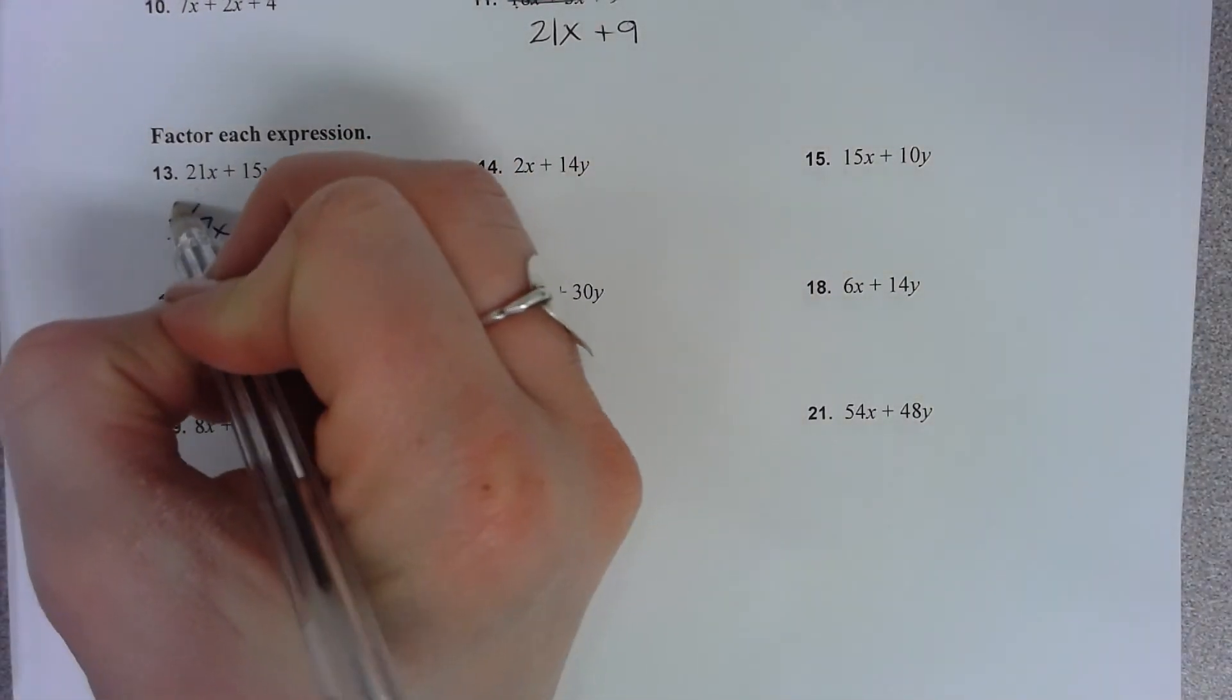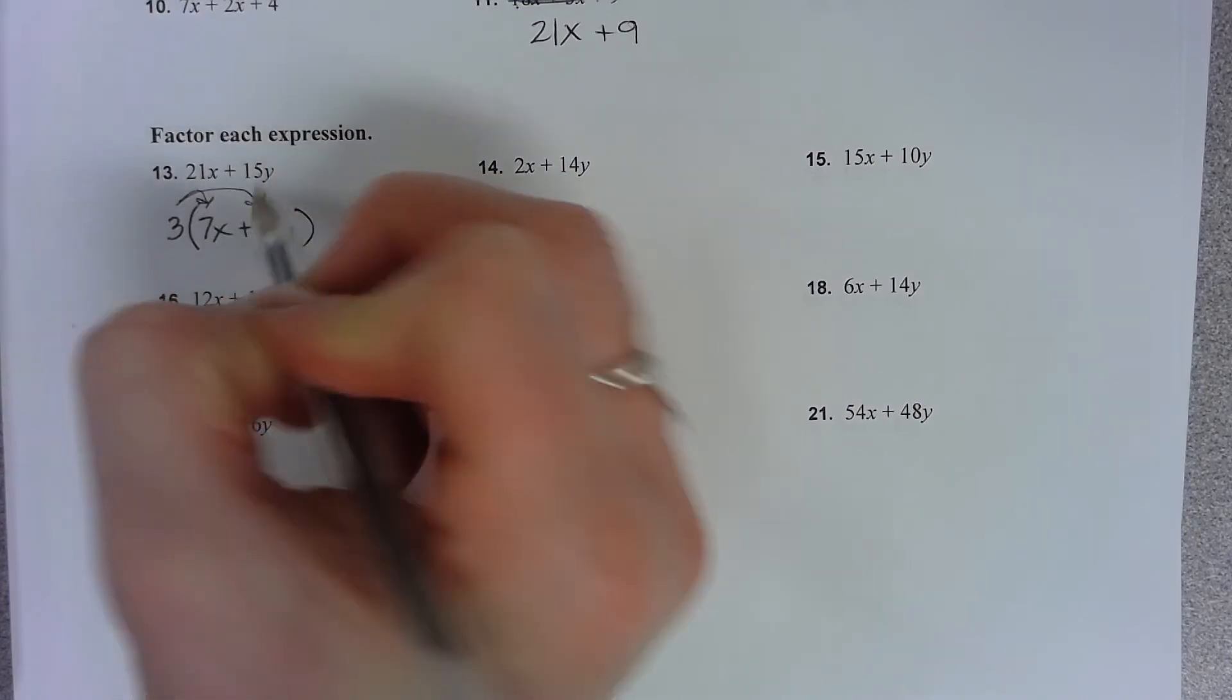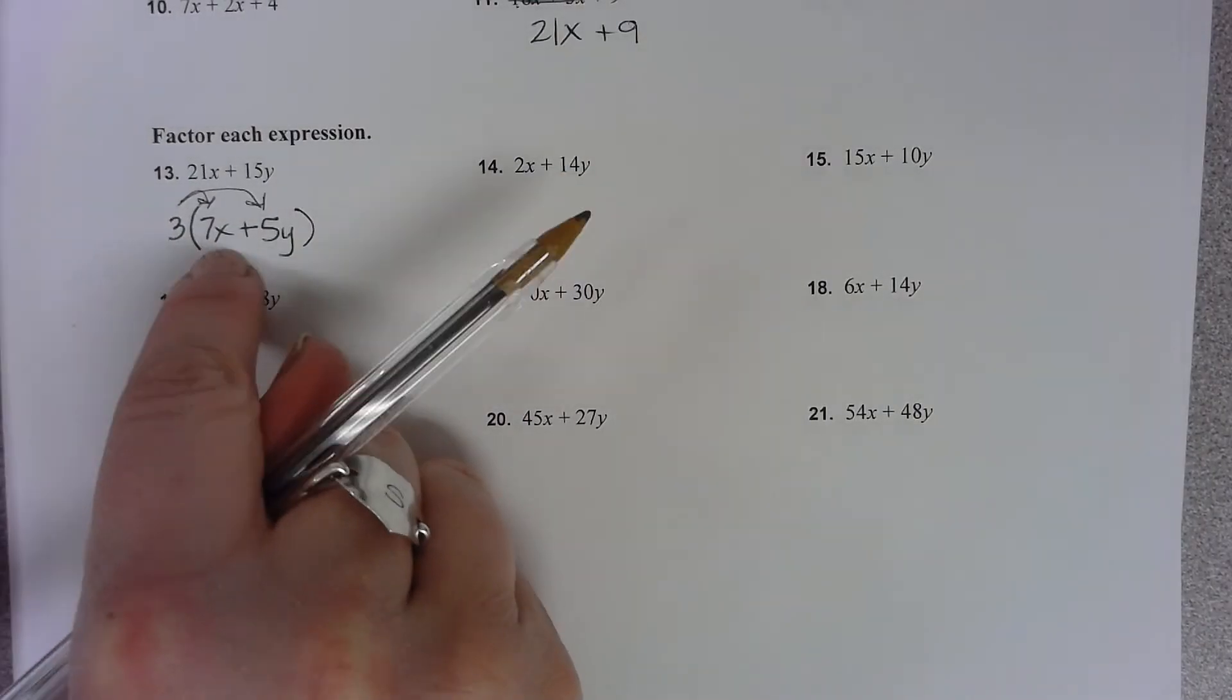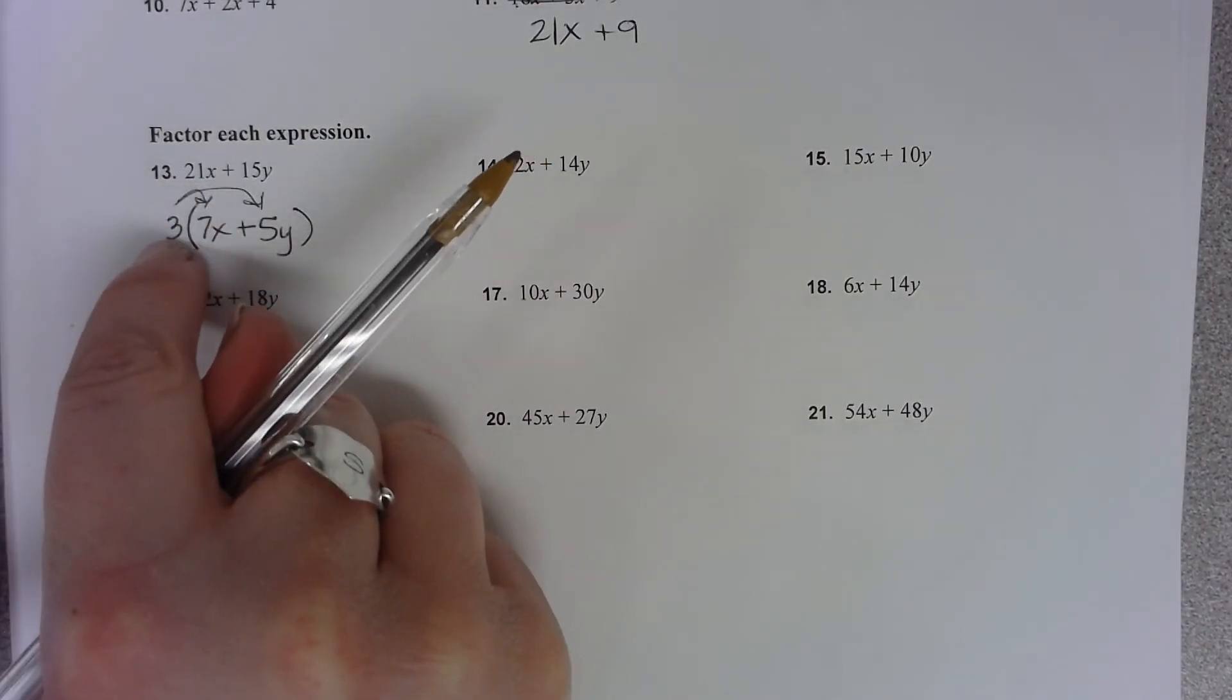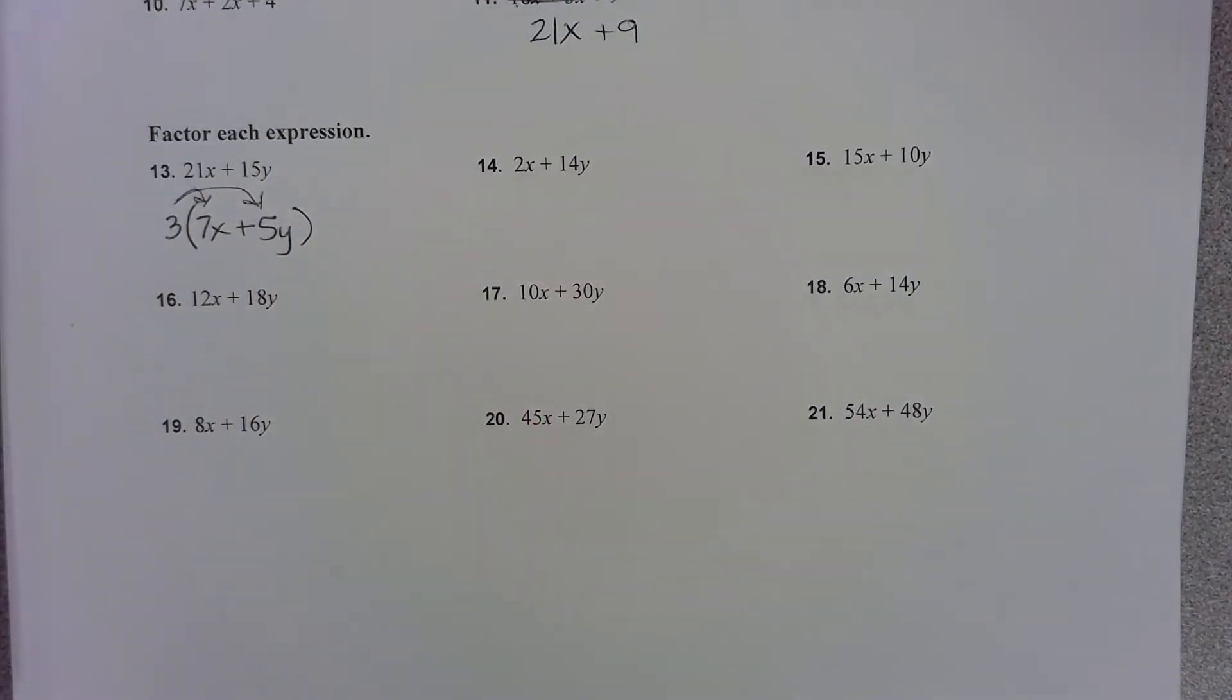So remember, you can use the distributive property once you think you found your answer to double check. 3 times 7x is 21x. 3 times 5y is 15y. And that would be your answer.